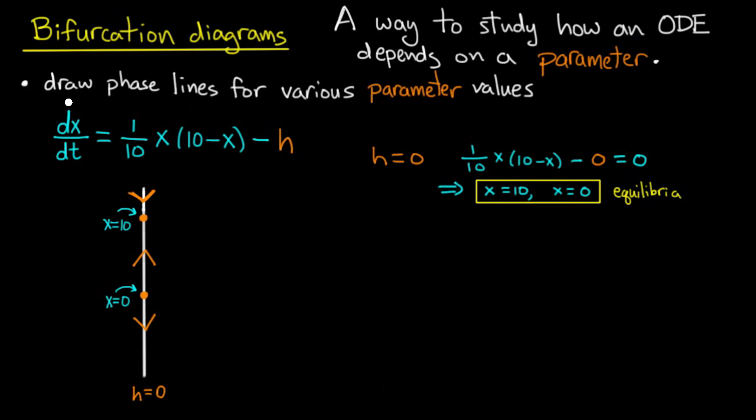The equilibria are where dx/dt is 0. So I take this right-hand side and I set it equal to 0, and I remember that I've set h equal to 0 in order to draw this phase line. So I have 1/10 x times 10 minus x equals 0, and that means x equals 10 and x equals 0. So those are the two equilibria.